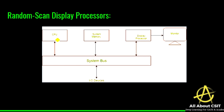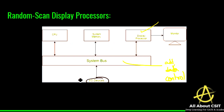The random scan display processor is similar to a regular processor but with a display processor added, which creates graphic features. The system bus consists of an address bus, data bus, and control bus. I/O peripheral devices are connected to the system bus, which communicates between internal and external parts of the system. The CPU is the main heart of the computer, system memory stores the RAM and OS, and the display processor handles graphical images and displays them on the monitor.